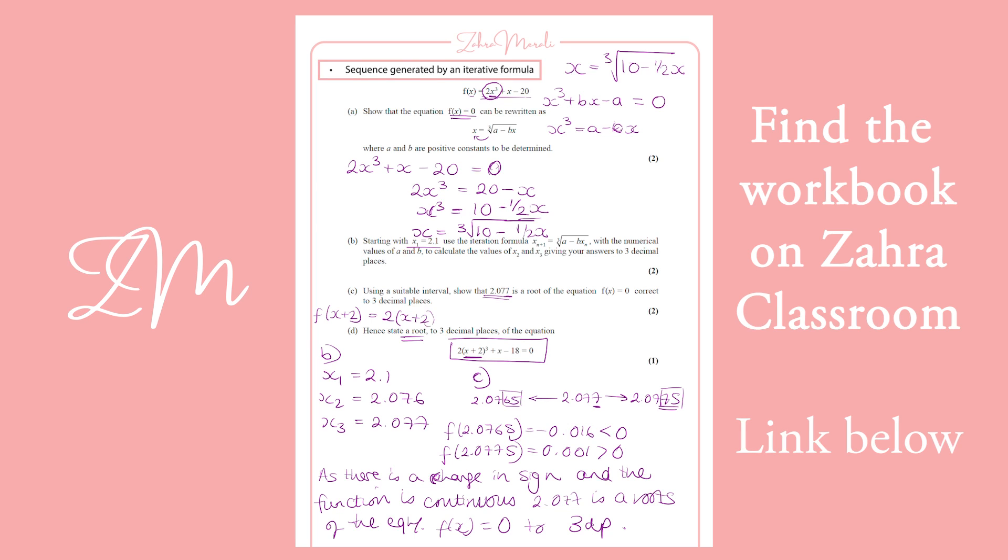So if we put that in, x plus 2 cubed, that agrees. Instead of x, we're going to have x plus 2. Minus 20 is going to give us 2 minus 20, which is minus 18. So that makes sense.